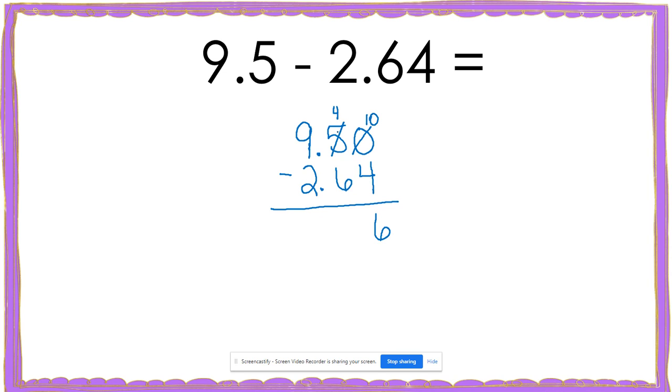Now I know that I also cannot take six away from four. So I'm going to have to borrow from the nine, which will make that an eight. But that changes my four to a 14. 14 minus six gives me eight. And then eight minus two gives me six.